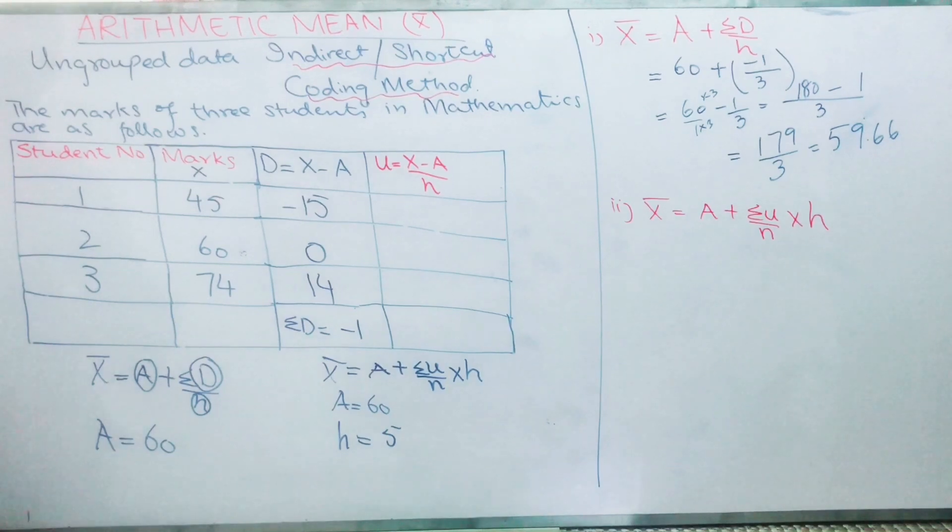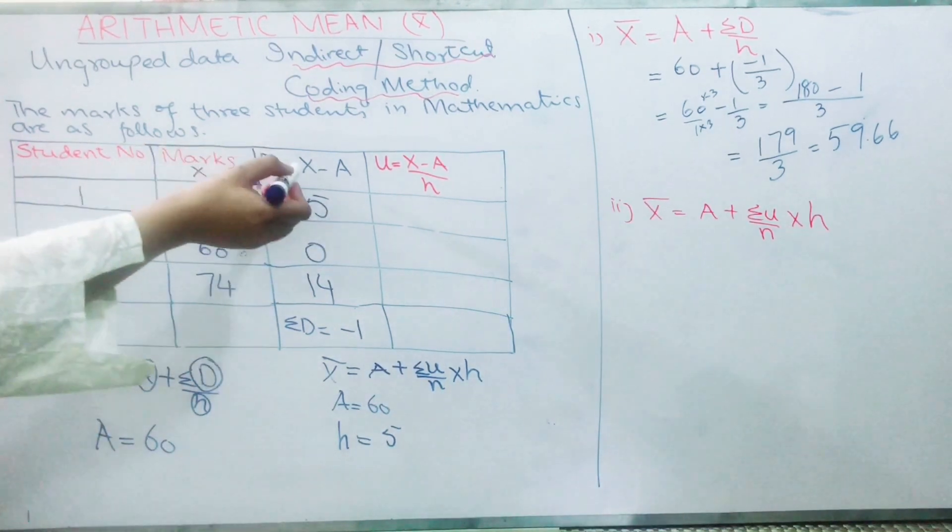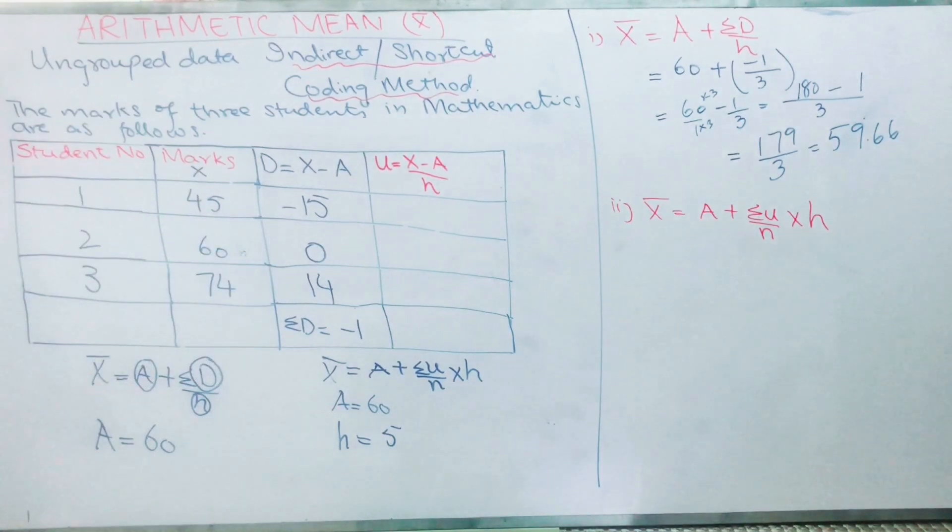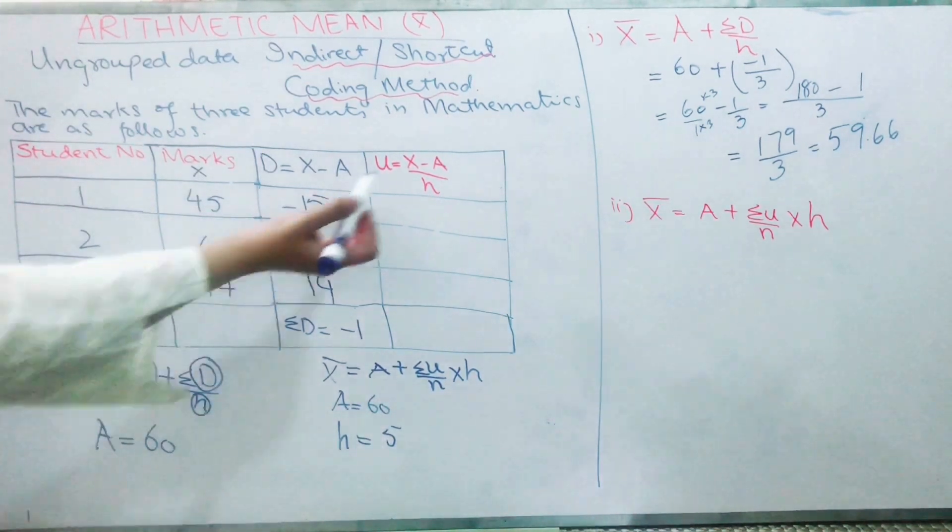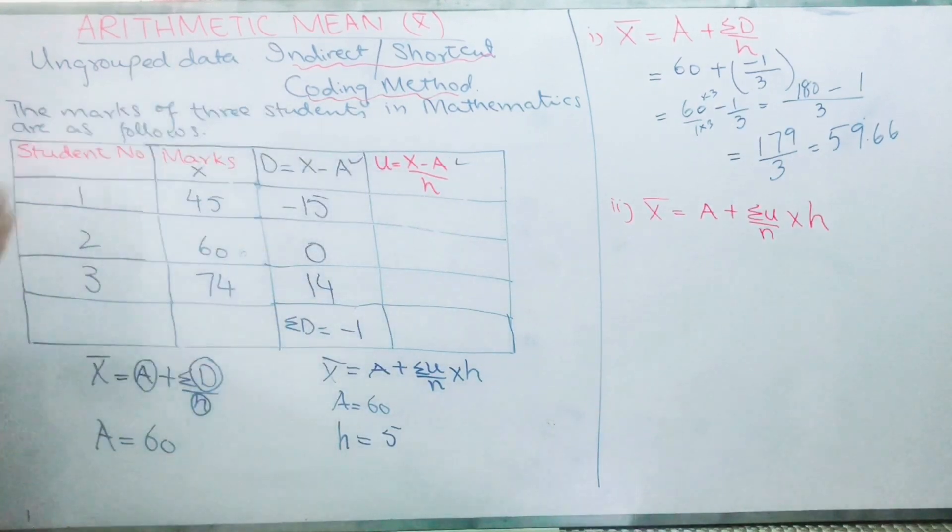Next step is to calculate u. u = (x - A)/h. So I have already calculated this column x - A. It means I just have to divide each value of this column by h. What is h? 5, the class interval, that is the assumed value, just like A. I hope it's clear now. Then the first value is minus 15. When you divide minus 15 by 5, you get minus 3. Zero divided by 5 is obviously zero. So 14 divided by 5 equals 2.8.